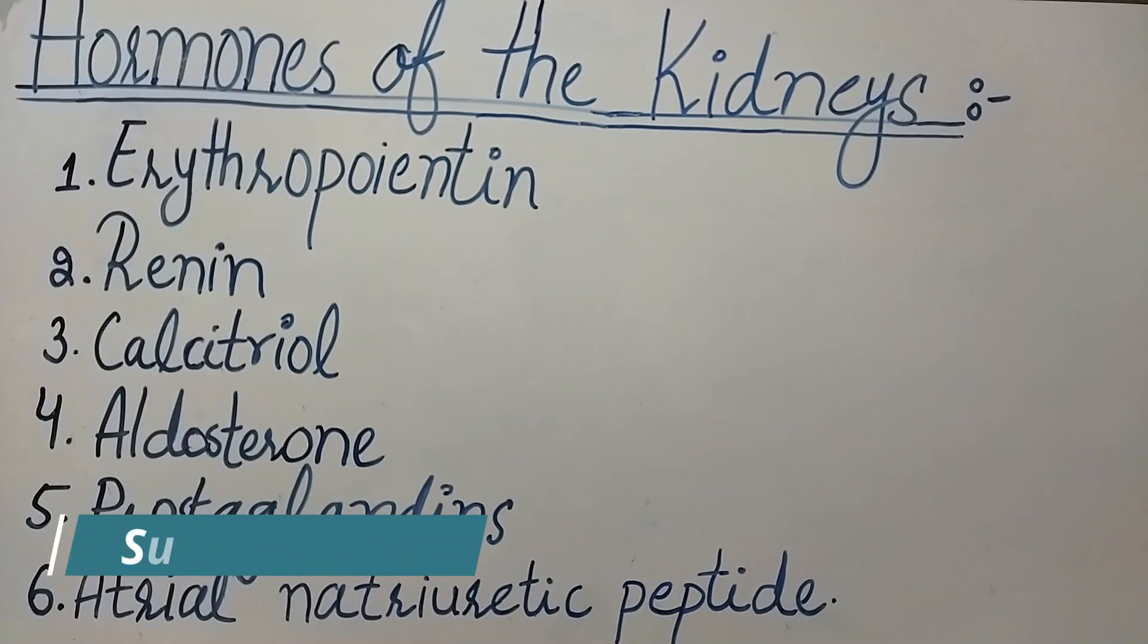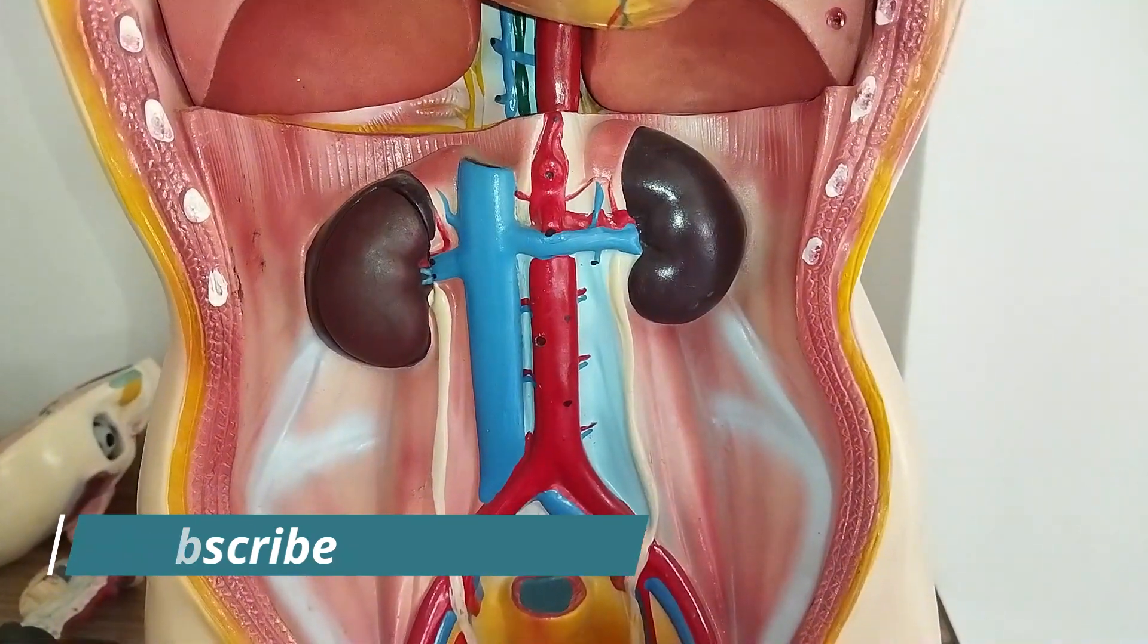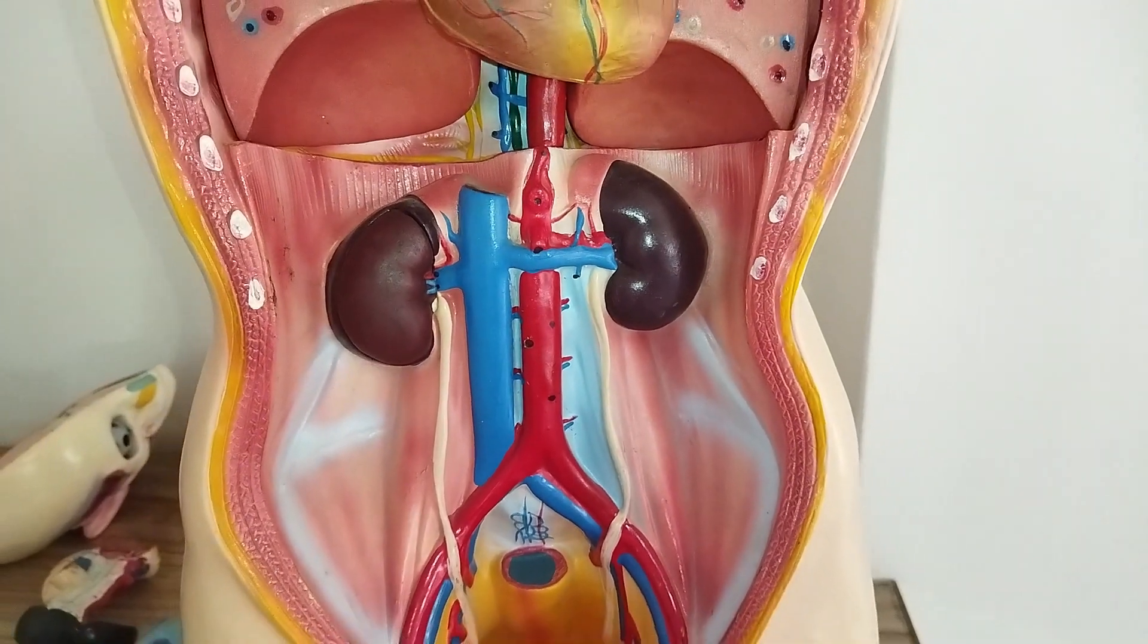Assalamu alaikum, this is Dr. Akhil Shah with another informative video. In this video we will take a closer look at the hormones produced by the kidneys, including erythropoietin, renin, calcitriol, aldosterone, prostaglandins, and atrial natriuretic peptide.